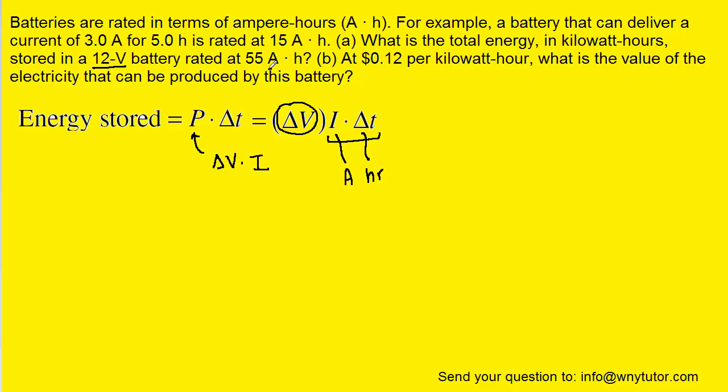If we look carefully, we see that the question gives us an amount of current multiplied by hours. And so this entire quantity, I times delta T, is going to turn out to be the 55 amp hours.